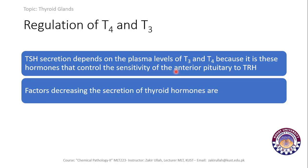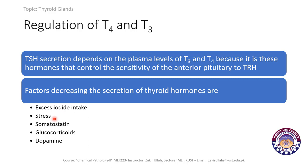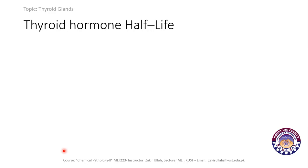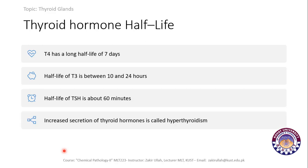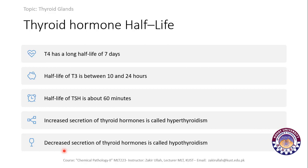Factors that decrease the secretion of thyroid hormone include excess iodide intake, stress, somatostatin, glucocorticoids, and dopamine. Regarding half-life: T4 has a long half-life of 7 days, while the half-life of T3 is about 10 hours to 24 hours (approximately 60 minutes by some accounts). Increased secretion of thyroid hormone is called hyperthyroidism, and decreased secretion is called hypothyroidism.